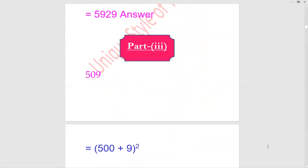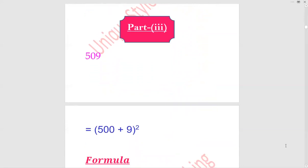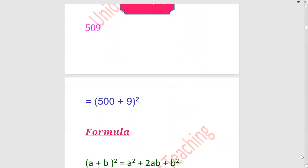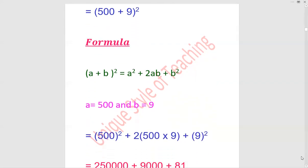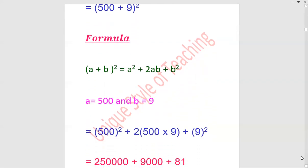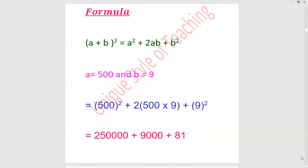Next number 509. 509 can be written as 500 plus 9. (a + b)² = a² + 2ab + b². Here a value is 500 and b value is 9. Plug in the values: 500² plus 2 × 500 × 9 plus 9².